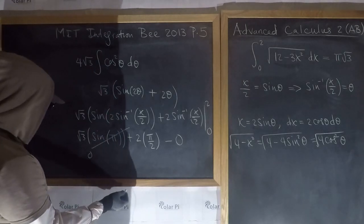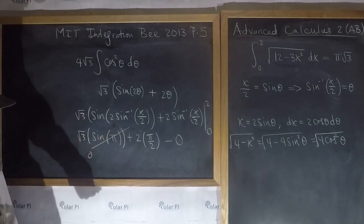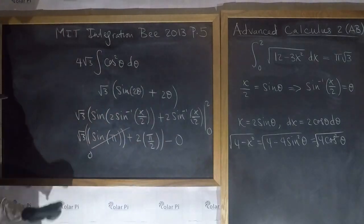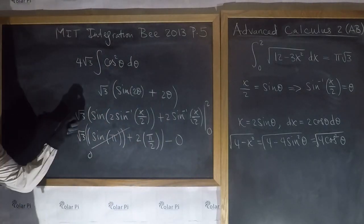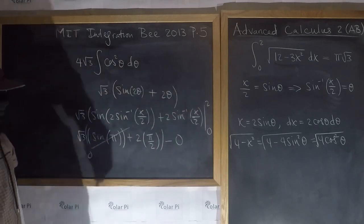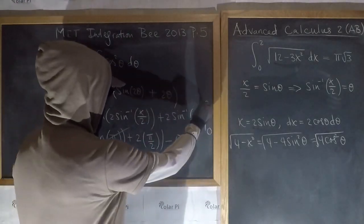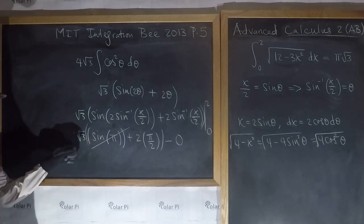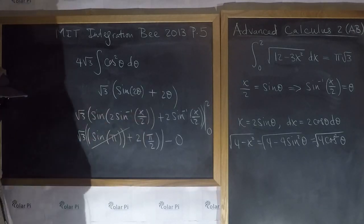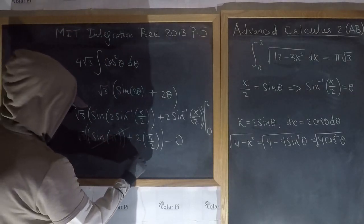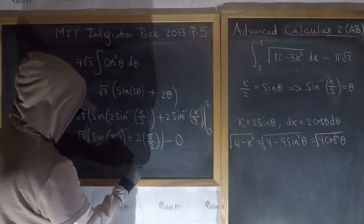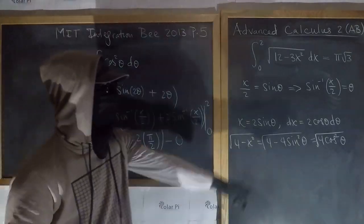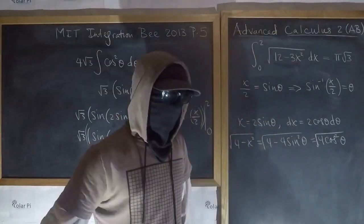Our final answer: root three was missing a closing parenthesis — the root three multiplies all of it. So root three times two times pi over two is pi root three. Same answer as before. Keep watching, take care.